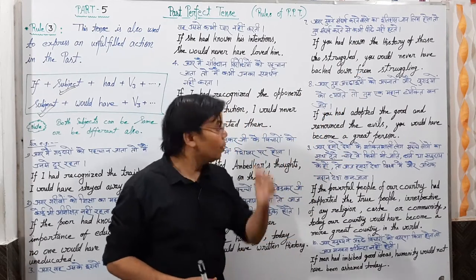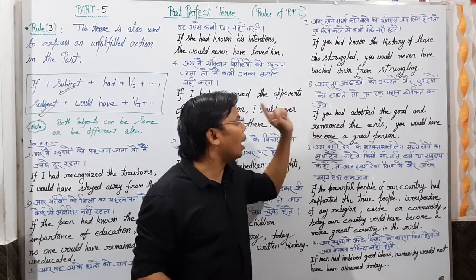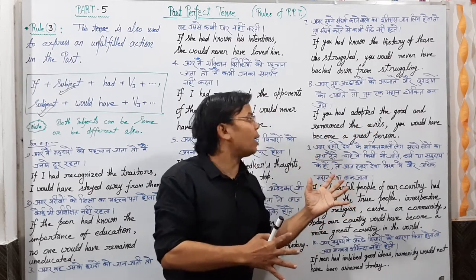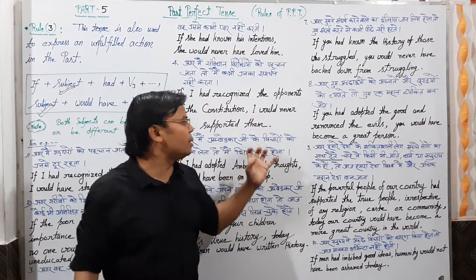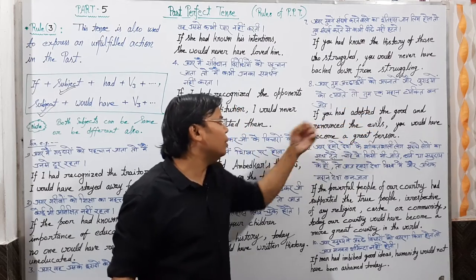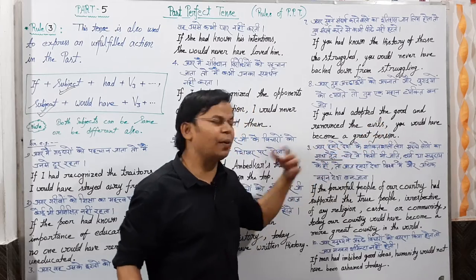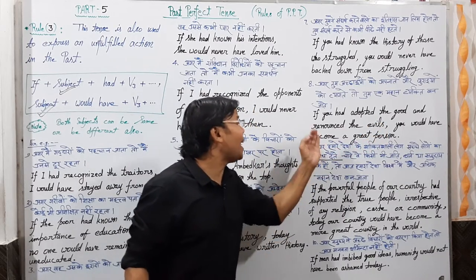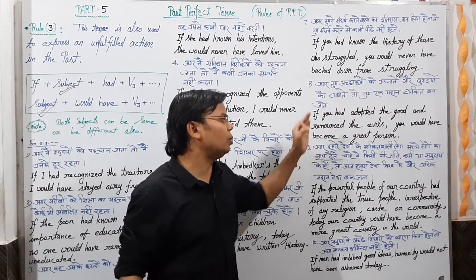Next example: अगर तुम अच्छाइयों को अपनाते और बुराइयों को त्यागते, तो तुम एक महान व्यक्ति बन जाते। English में: if you had adopted the good and renounced the evils, you would have become a great person। दूसरे तरीके से: you would have become a great person if you had adopted the good and renounced the evils।